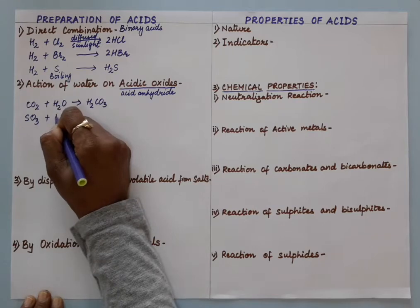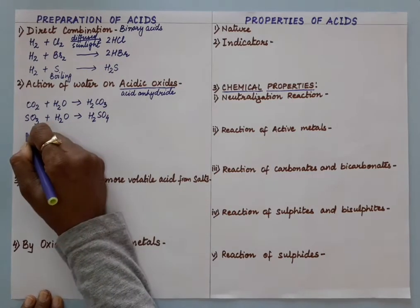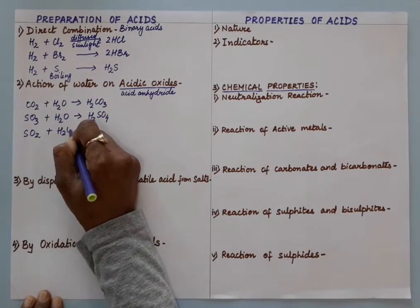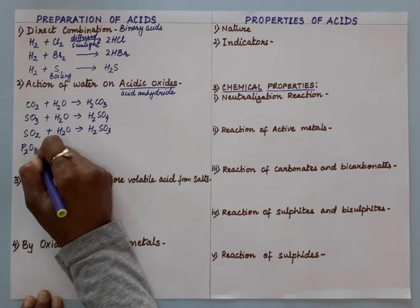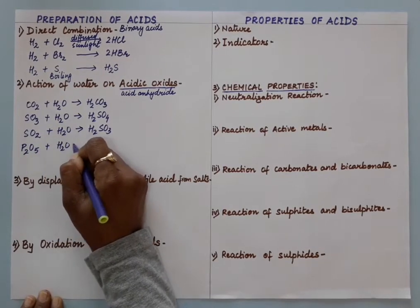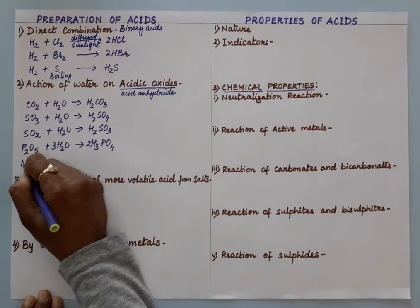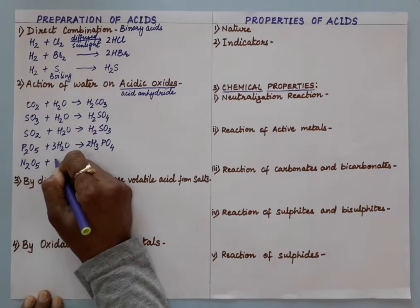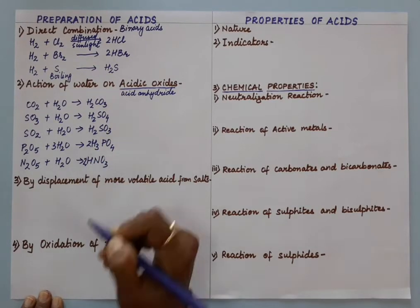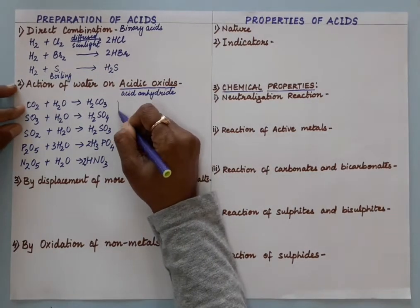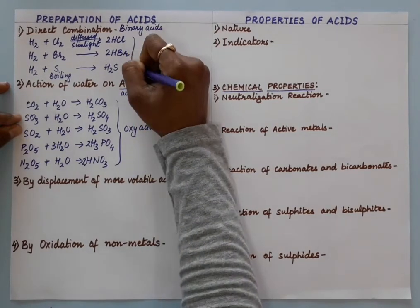Sulfur trioxide when dissolves in water, we get sulfuric acid H₂SO₄. Sulfur dioxide when dissolves in water, we get sulfurous acid H₂SO₃. P₂O₅ when dissolves in water, we get phosphoric acid H₃PO₄. Dinitrogen pentoxide dissolves in water, we get nitric acid HNO₃. So we will call all of these oxy acids, and the binary ones are hydro acids.